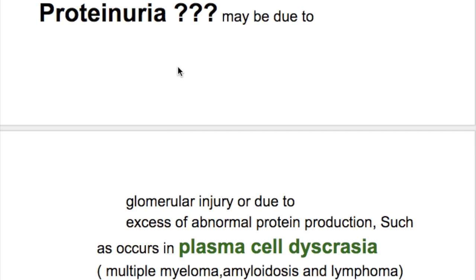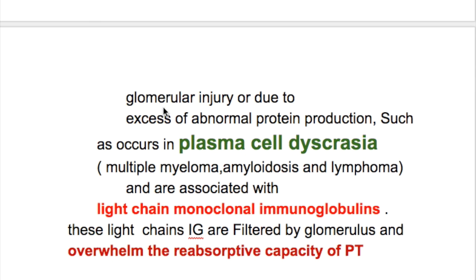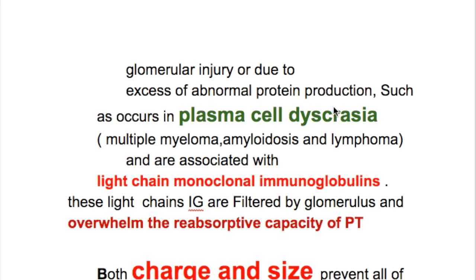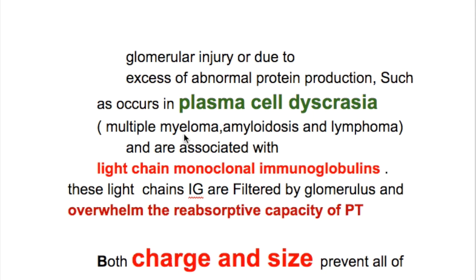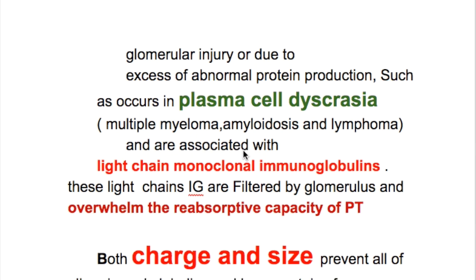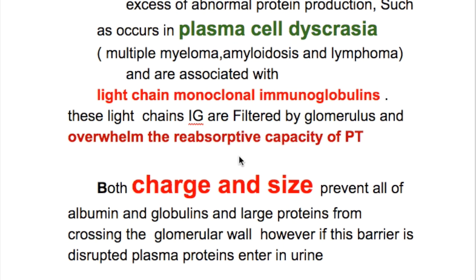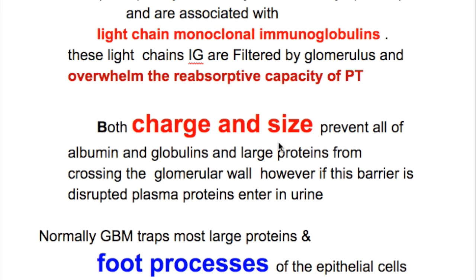Proteinuria. What causes proteinuria? Proteinuria may be due to glomerular injury or due to excess abnormal protein production, such as occurs in plasma cell dyscrasias, multiple myeloma, amyloid, and lymphoma — these are associated with light chain monoclonal immunoglobulins. These light chain immunoglobulins are filtered by the glomerulus and overwhelm the reabsorptive capacity of the proximal tubule. Both charge and size prevent albumin, globulins, and large proteins from crossing the glomerular wall.